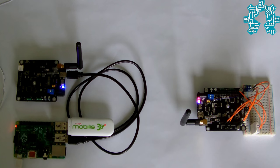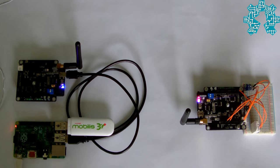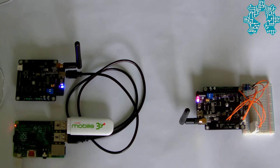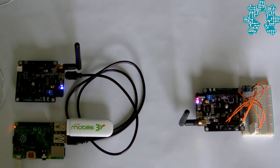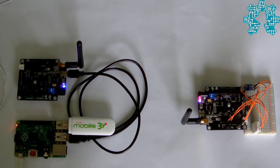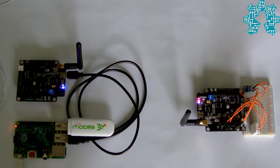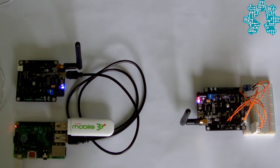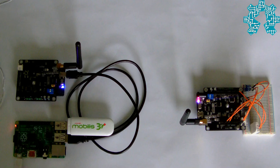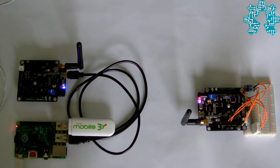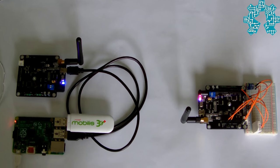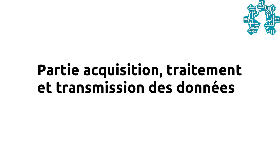The setup is composed of two Freakduino cards which handle the collection and transmission of data to a node we call node-puis, which then passes these data to a Raspberry Pi B+, which takes care of the Plotly service via a 3G connection. Let's start with the acquisition and transmission of data.